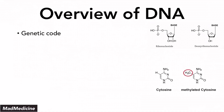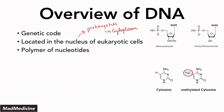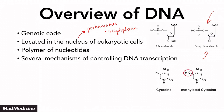DNA is our genetic code. It's located in the nucleus of eukaryotes. In prokaryotes, it is located in the cytoplasm. Our DNA is a polymer of nucleotides, like these deoxyribonucleotides right here.